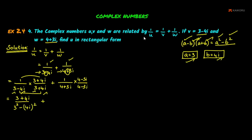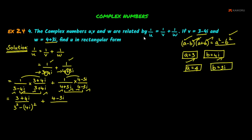For the second fraction 1/(4 plus 3i), multiply by conjugate (4 minus 3i)/(4 minus 3i), giving (4 minus 3i) divided by (4 plus 3i)(4 minus 3i). Using A squared minus B squared with A equals 4 and B equals 3i, the denominator is 4 squared minus (3i) squared, which is 16 minus 9i squared.